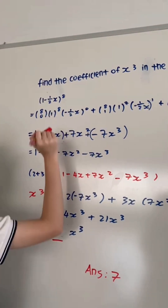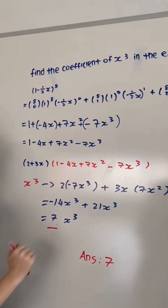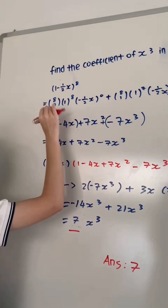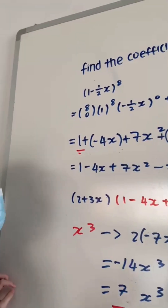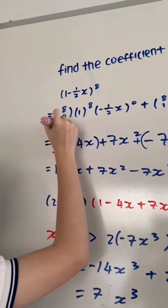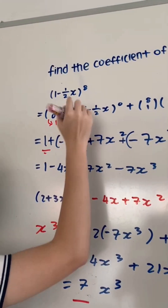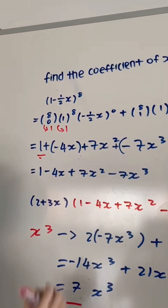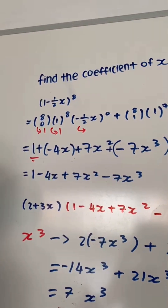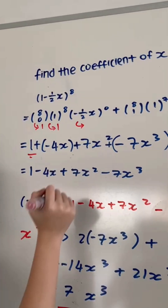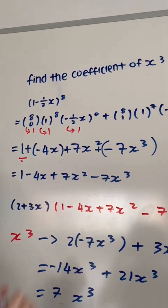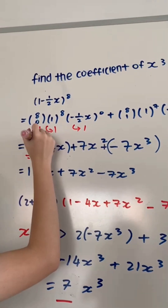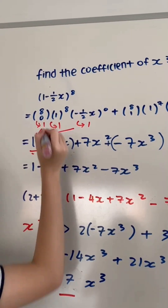Now we calculate each term. For the first term: 8C0 equals 1, 1^8 equals 1, and (-½x)^0 equals 1. So 1 times 1 times 1 equals 1. The first term is 1.